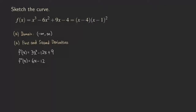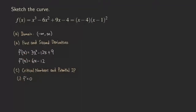Now we can find the critical numbers, which are quite important. We also want to find the potential inflection points for identifying the actual inflection points. To find the critical numbers, we use the definition: when f' is equal to zero. So we set f' equal to zero, giving us 3x² minus 12x plus 9 equals zero.